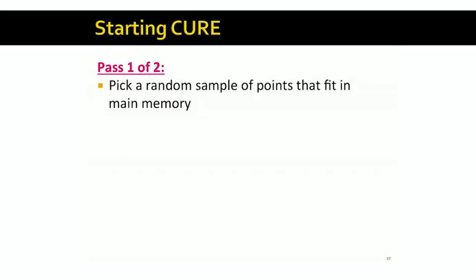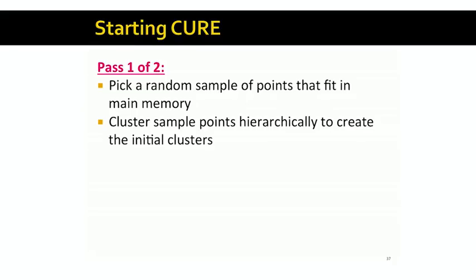The CURE algorithm is a two-pass algorithm. In the first pass, we sample a random set of points from the data set. Remember, the data set is really large and doesn't fit in memory — it's sitting on disk somewhere. We're going to randomly sample only enough points to fit in memory. We've covered techniques for sampling in another lecture. Once we have sample points, we're going to use any main-memory clustering algorithm — for example, a hierarchical clustering algorithm that we covered in a previous lecture — to cluster those sample points and create an initial set of clusters.